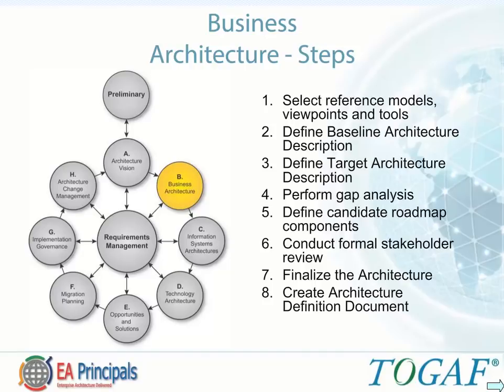The following sequence of steps is common to phases B, C, and D. In the Business Architecture phase, the steps are: select reference models, viewpoints, and tools; define a baseline architecture description; define the target architecture description; perform a gap analysis between the two; define candidate roadmap components; conduct a formal stakeholder review and finalize the architecture; and finally, create an architecture definition document.